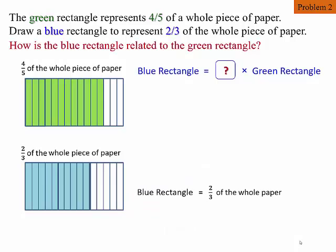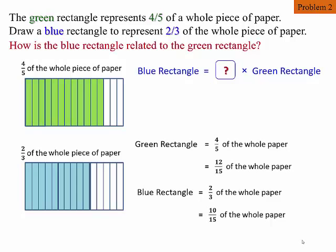The blue rectangle has two-thirds of the whole paper, which is equivalent to 10/15 of the whole paper. Whereas, the green rectangle is four-fifths of the whole paper. Equivalently, it's 12/15 of the whole paper. Now, we are essentially trying to relate 10/15 of the whole paper with 12/15 of the whole paper.